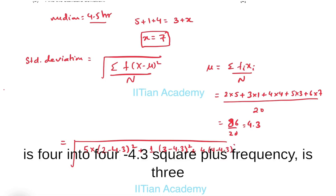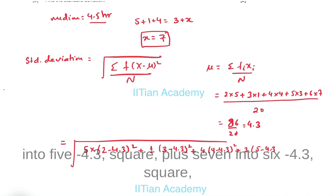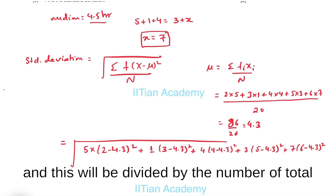...next is 4 into 4 minus 4.3 square, plus frequency is 3 into 5 minus 4.3 square, plus 7 into 6 minus 4.3 square, and this will be divided by the total number of frequency which is 20.